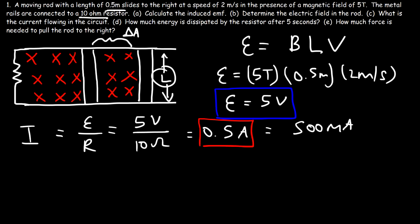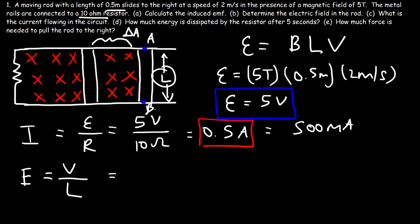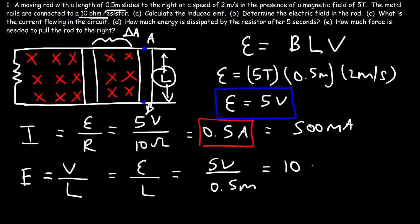Now let's calculate the electric field in the rod — I skipped that and went straight to part C, so let's go back to part B: determine the electric field in the rod. The electric field is basically the voltage divided by the distance over which the voltage acts. The induced EMF across the rod is 5 volts, so the electric field is the induced EMF divided by the length of the rod: 5 volts divided by 0.5 meters equals 10 volts per meter.